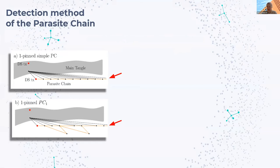How can we do this? Basically, the parasite chain has a very different structure to the main Tangle. In particular, if the attacker wants to have a very efficient parasite chain, he needs to create a lot of links to the main Tangle. As you can see in this very simple parasite chain, each transaction here has only one approver.